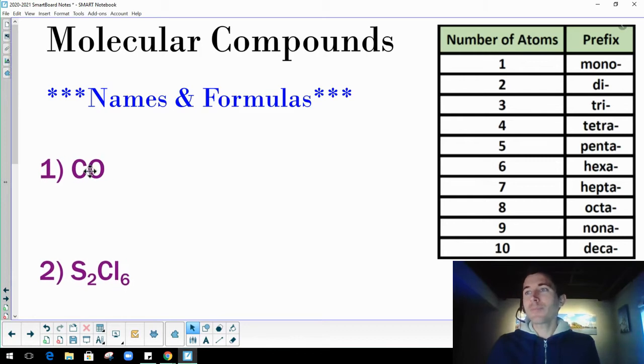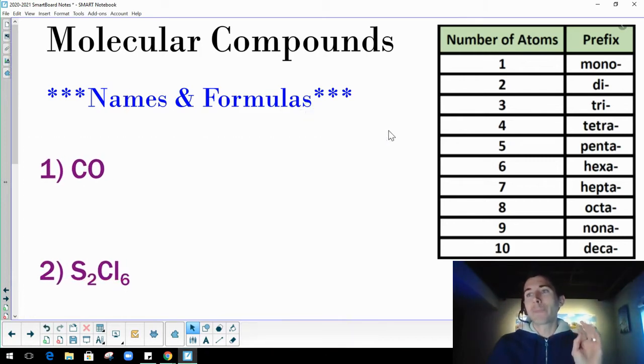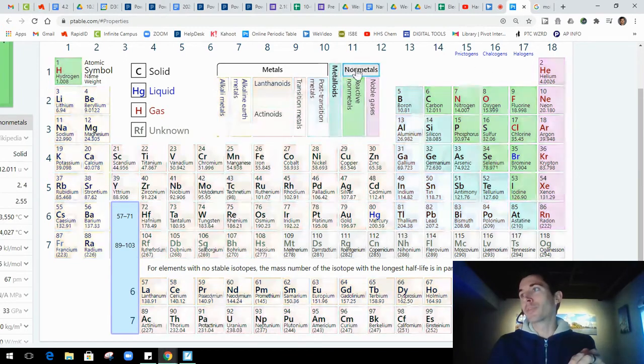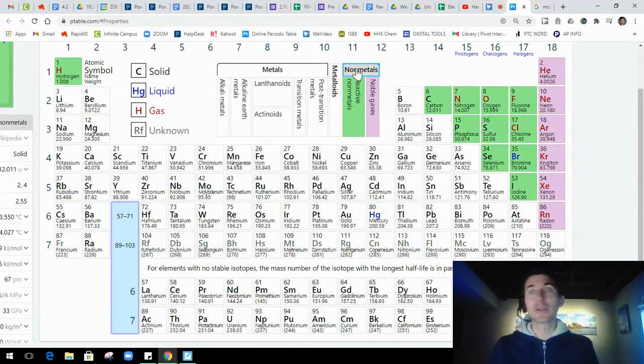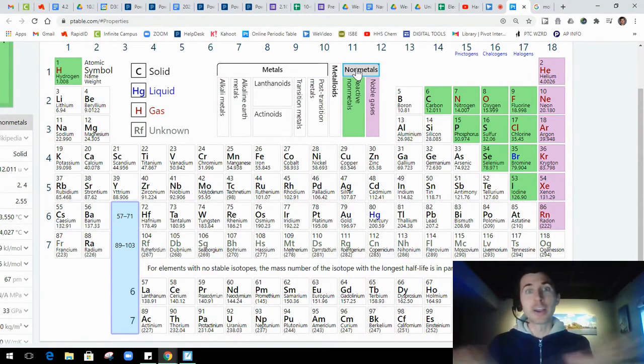So names and formulas. I want to do CO first. Now again, to figure out if it's molecular or ionic for the compounds, check your periodic table to see what kinds of atoms are being bonded together for your compound. So for this one, C and O, if you check your P table, carbon and oxygen are both nonmetals.